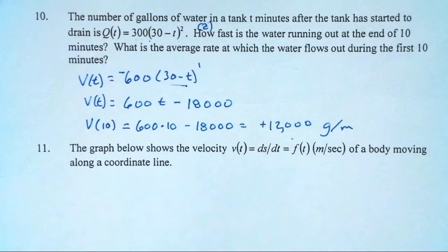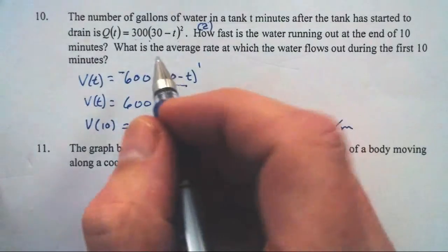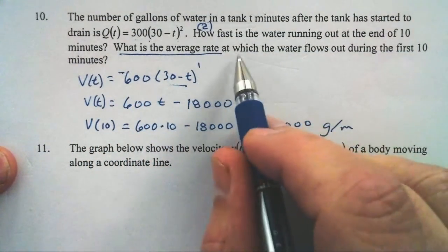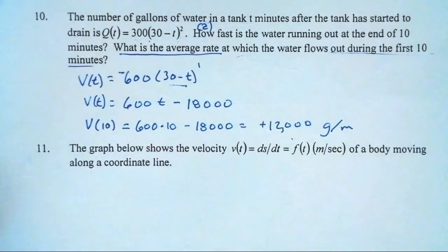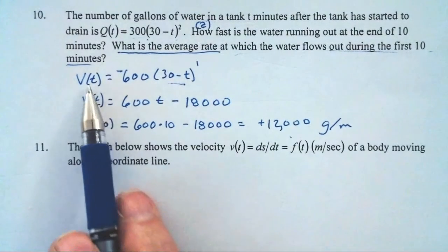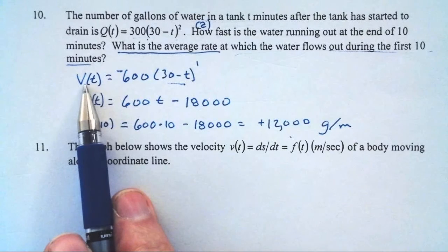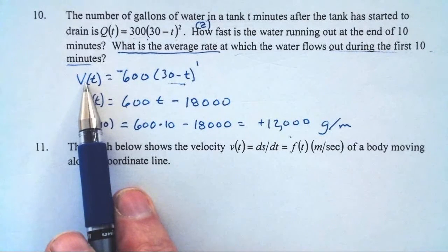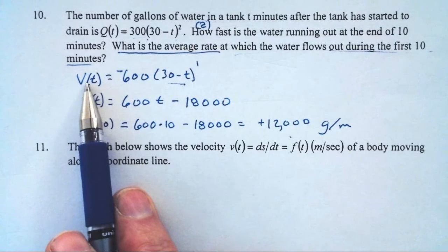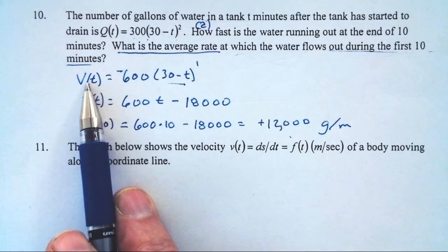Part B: what is the average rate at which the water flows out during the first 10 minutes? Our velocity equation gives us the instantaneous rate; I want the average rate. Much like if I said over five hours I drove 300 miles — what was my average rate? I needed to take the 300 and divide it by five. So that wasn't about my velocity at all — that was about how far I went divided by the time. So I need to know how much the water has changed.